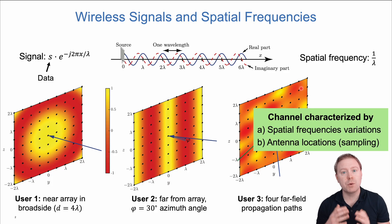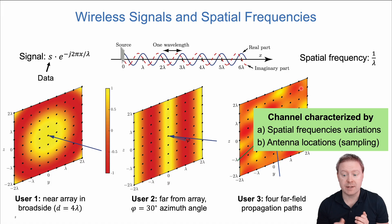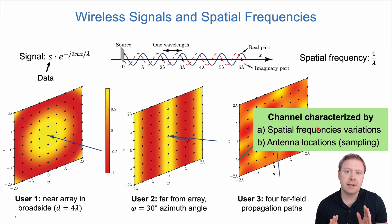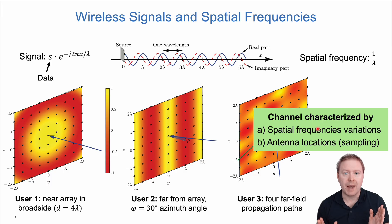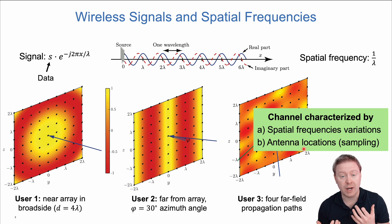The main point is that a channel between a single-antenna transmitter and a base station array is characterized by the spatial frequency variations of the impinging waveform onto the panel where we have our antennas, and the antenna locations where we sample that wave. This is a general characterization of our channel.